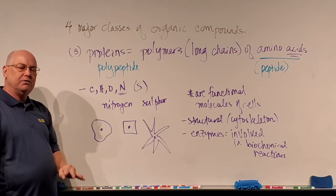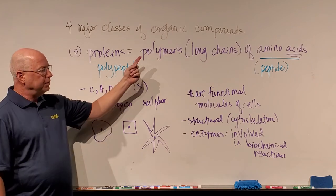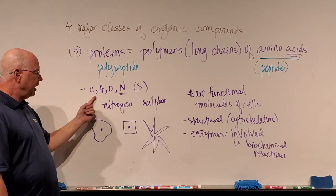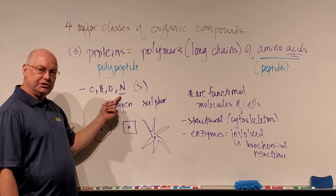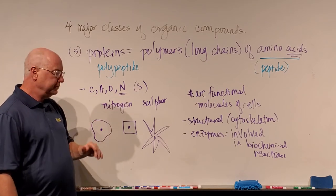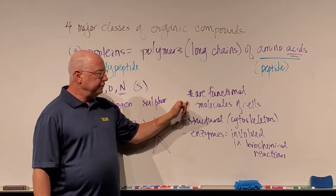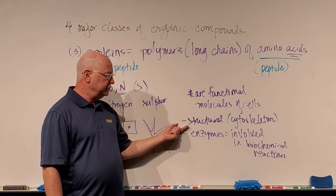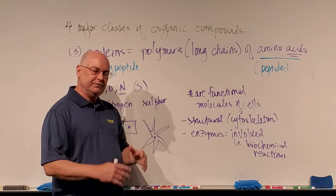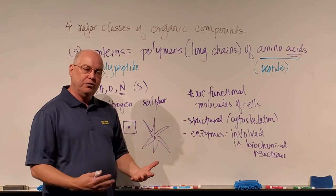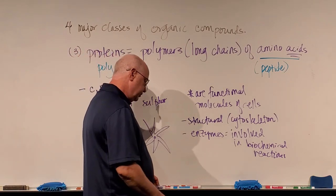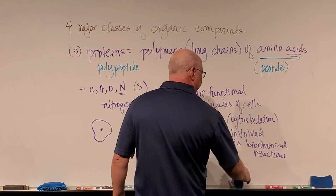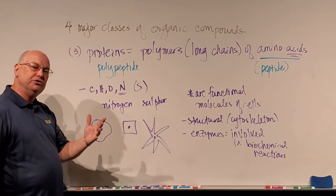So the three things to know about proteins: they are polymers or long chains of amino acids, also called polypeptides; they're made out of carbon, hydrogen, oxygen, and nitrogen, with a couple having some sulfur; and they are the functional molecules of our cells — performing cellular functions as structural proteins forming the skeleton of the cell, and as enzymes performing all the biochemical reactions inside the cell.